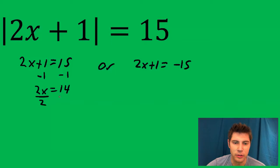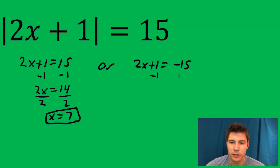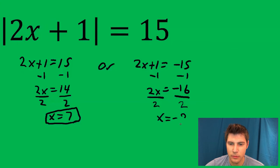And then the way you undo a 2x is you divide by 2. That's one of the answers. That's the other answer.